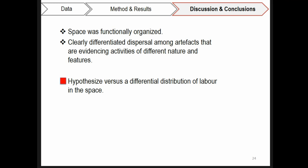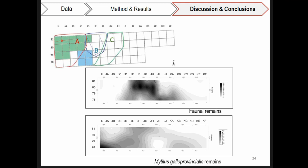More specifically, about the planned positioning of activity areas in space, we hypothesize regarding a differential distribution of labor in space. As clearly, differential dispersals are shown among artifacts, which are evidencing the location of activities of different nature in the area. To exemplify, I just want to highlight again the different and opposed distribution of faunal remains and Mytilus galloprovincialis remains, on which I must say that Mytilus galloprovincialis remains were not only consumed but also we have evidence of being used as a means for developing practices related with processing fibers.